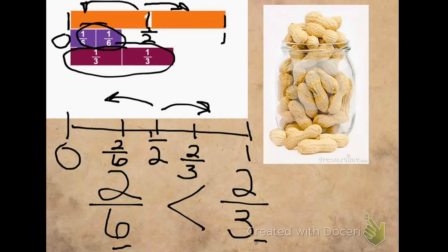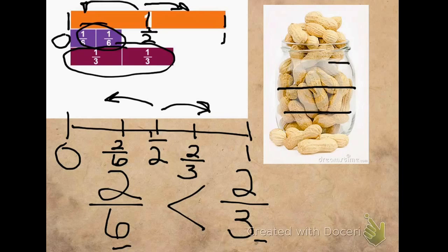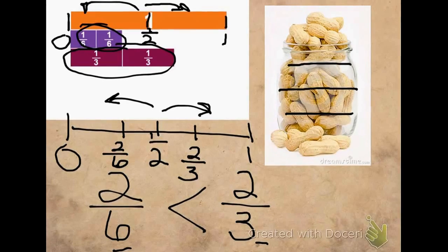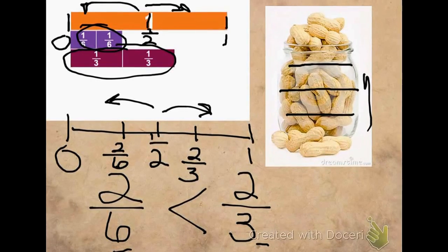So, with my jar of peanuts, if this is about half, I would say that Carrie is going to buy about this many peanuts, and Alan would be buying about this many peanuts, which is more.